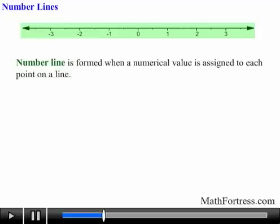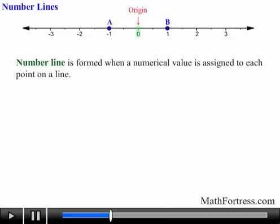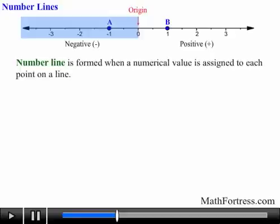For example, the following line represents a number line and point A is located at negative 1. Likewise, point B is located at positive 1. Notice that number lines are useful to describe the location of a point relative to the origin, which is usually assigned a value of 0. Also notice that this line is broken into two regions or halves: the half on the right contains positive numbers and the half on the left contains negative numbers.